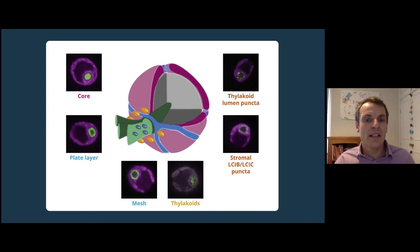An outer plate layer glued together by a mesh protein prevents carbon dioxide from escaping out of the pyrenoid. And finally, peripheral proteins are involved in capturing and delivering carbon dioxide to rubisco in the core of the pyrenoid.